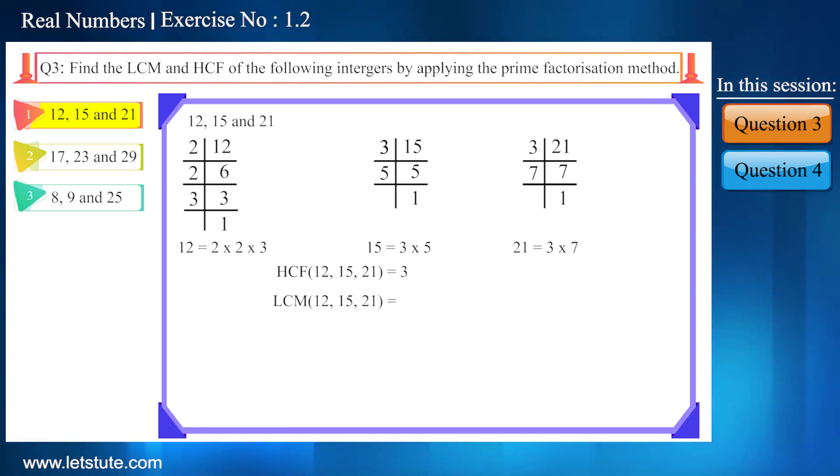Now let's find the LCM. First write down the common number that is 3, and also we will write down those numbers once which are not common, that is 2 into 2 into 5 into 7. Now on multiplying we will get 420. Thus we found the HCF and LCM of both these numbers.